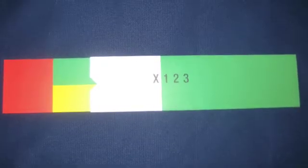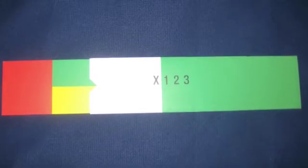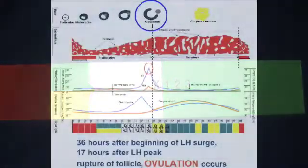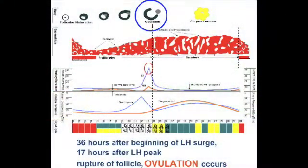Here is a typical fertile cycle showing the hormonal pattern of fertility based on the stamp or symbol that the woman has recorded on her chart, shown underneath. It enables the precise time of ovulation to be seen.